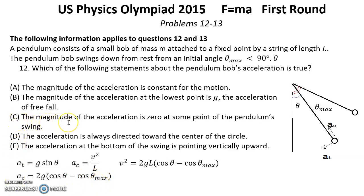C: The magnitude of the acceleration is 0 at some point of the pendulum's swing. As we can see it's not 0. Tangential has a 0 in the lowest point and centripetal 0 in the highest point. But both they don't have 0 magnitude in any point.